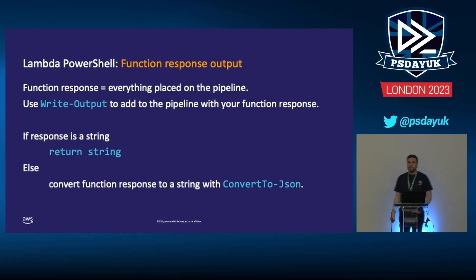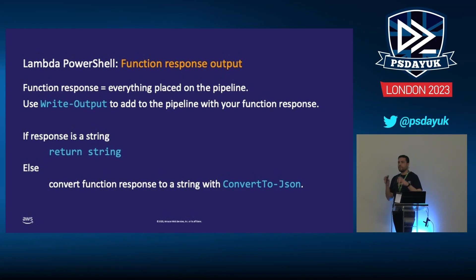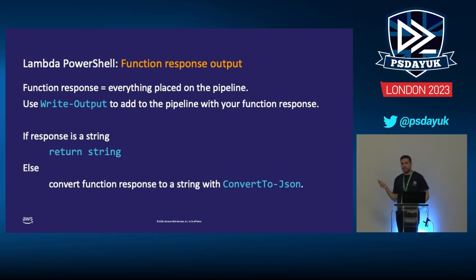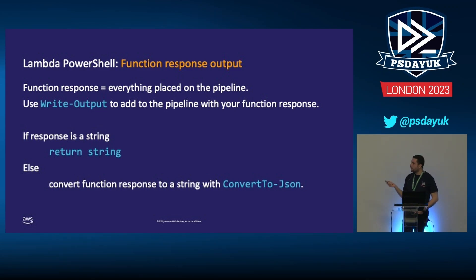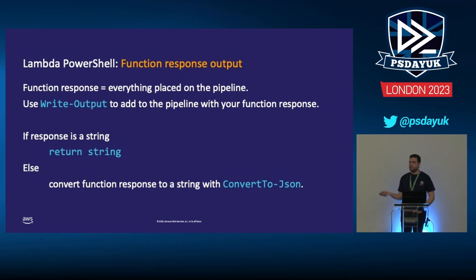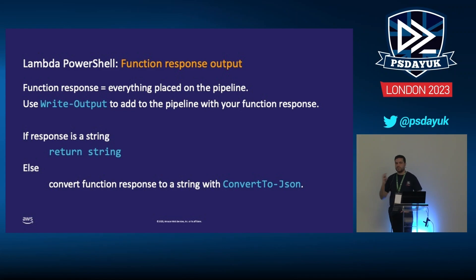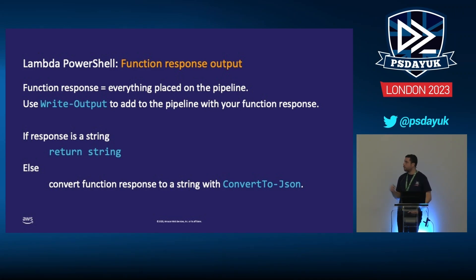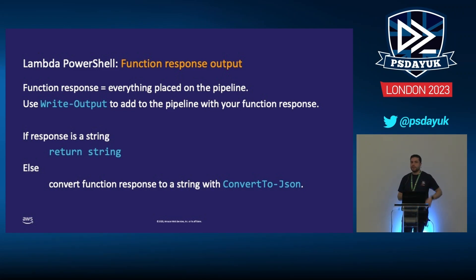The custom runtime is great for PowerShell because it captures all function output and logs it. Everything placed on the pipeline gets dumped to the logs — including `write-output`, which was not supported with the previous .NET implementation but now is. Any responses that are not strings are automatically converted using the `ConvertTo-Json` cmdlet. All output is pushed to the Amazon CloudWatch log group, which is where you store your logs.